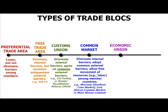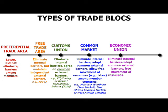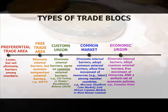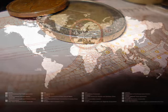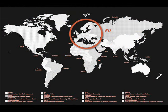Beyond the common market is economic union. Members eliminate internal barriers, adopt common external barriers, allow free movement of resources among the members, and adopt a uniform set of economic policies. The European Union, once the common currency had been adopted, became a prime example of an economic union. With one currency, they had to adopt one monetary policy.